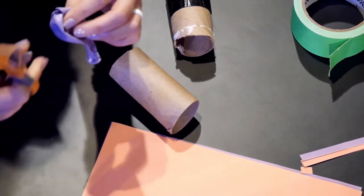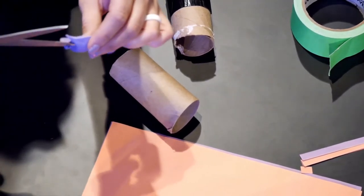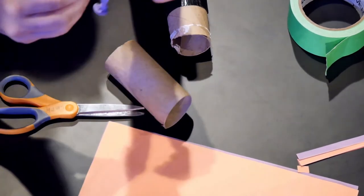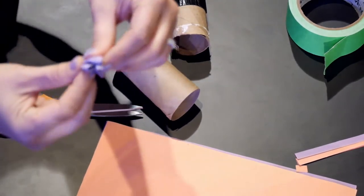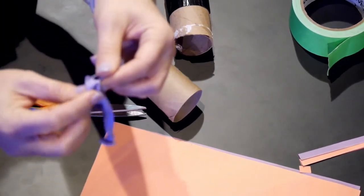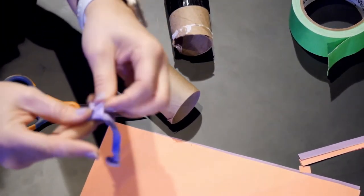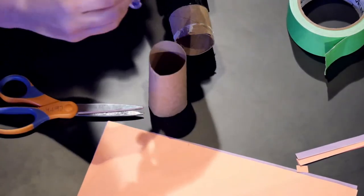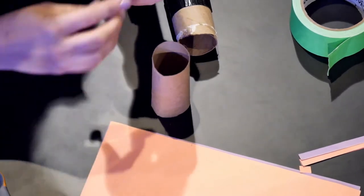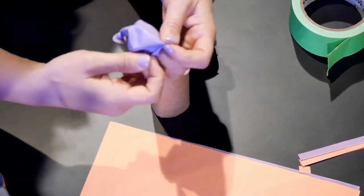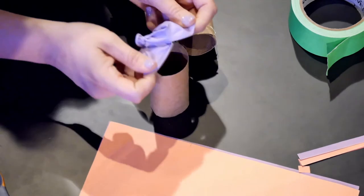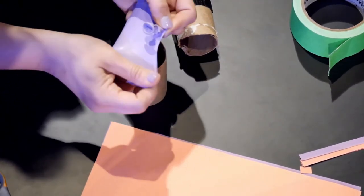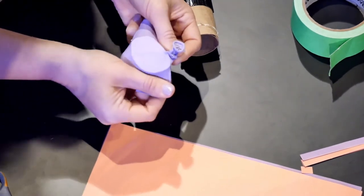Now, again, have somebody adult to help you. This is kind of tricky. This part will get some help. So I've kind of opened it up to where I now have a hole in the top of my balloon. So what we're going to do now is we are going to open up the balloon and I'm going to stretch it over the top.